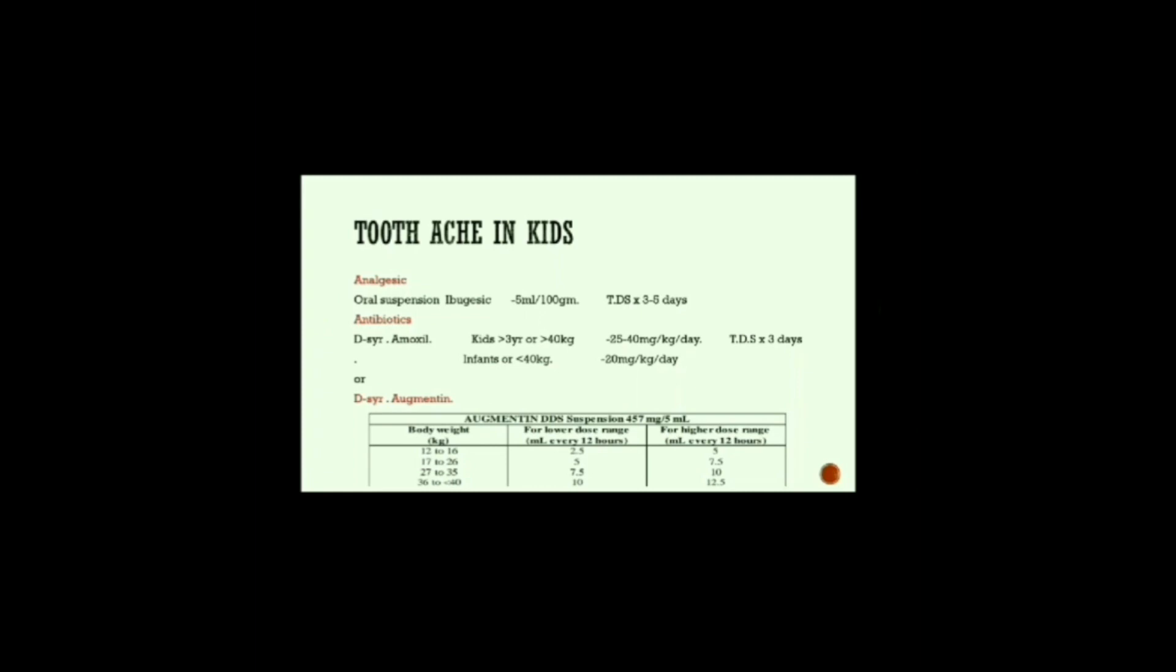For antibiotics, syrup amoxil is given. For kids who are of more than 3 years of age or more than 40 kg, 25 to 40 mg per kg per day can be given. For the infants or the kids with weight less than 40 kg, 20 mg per kg per day is prescribed. Tablet Augmentin is also given depending on the body weight as follows.